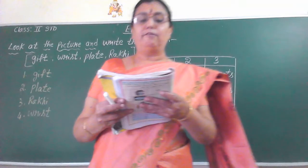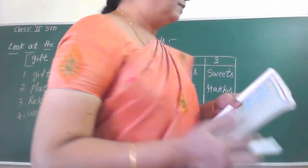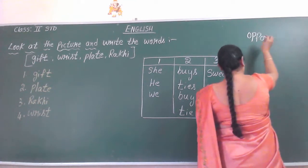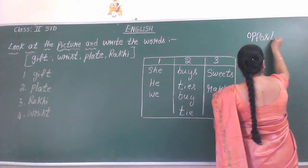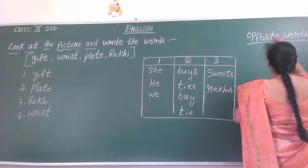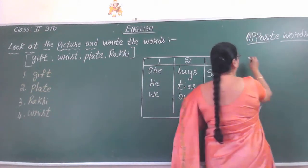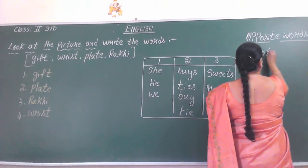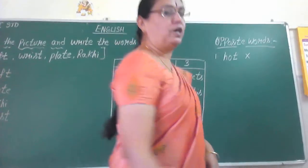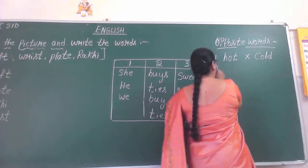Page number 11 — fill in the box with opposite words. One is done for it. What are the opposite words they are given? First one: hot — what is the opposite of hot, children? Cold. The opposite of hot is cold — they have given that as an example.